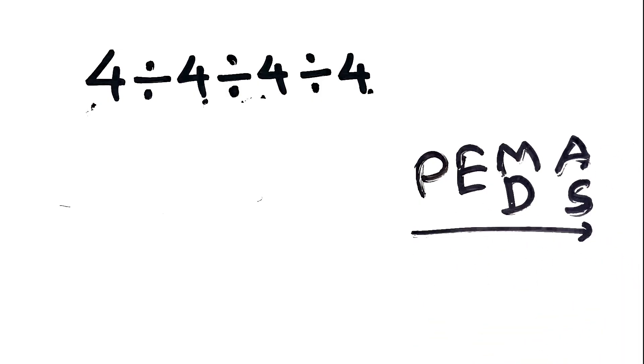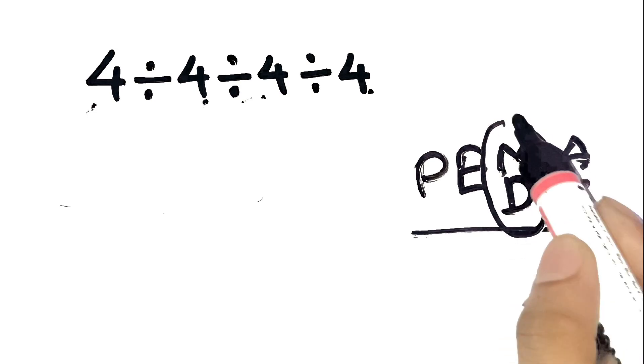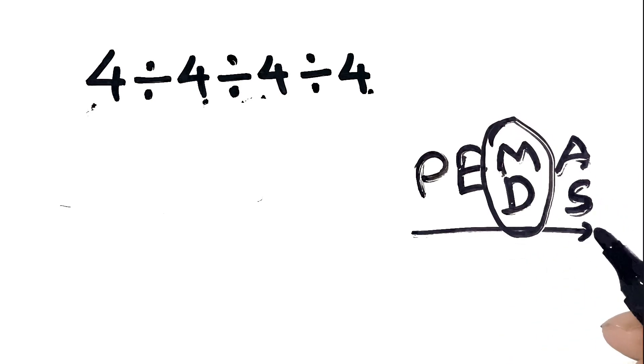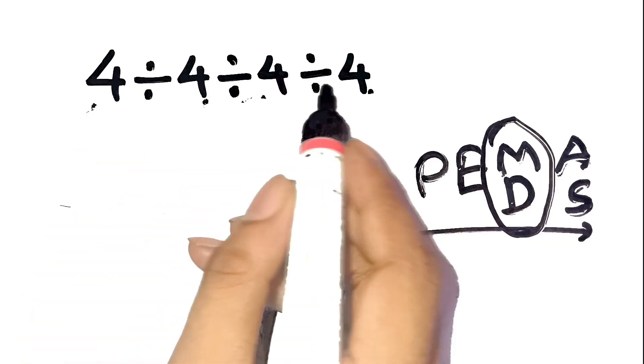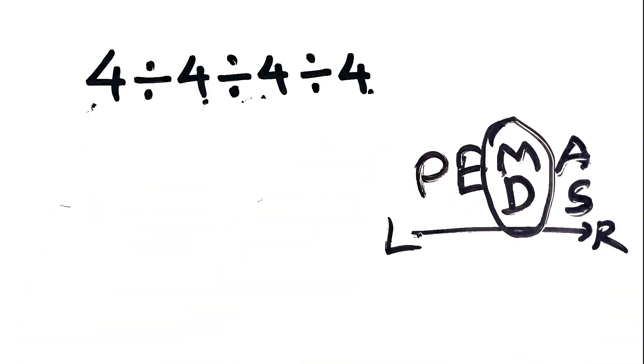But here's the part everyone forgets. Multiplication and division are equal priority operations. That means we don't just do all divisions from the outside in. We go left to right.